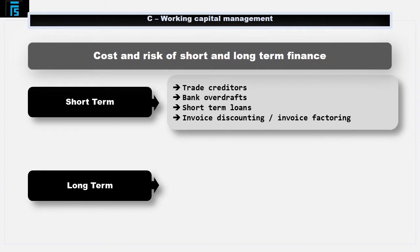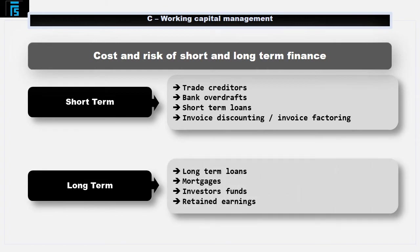Long-term finance sources include long-term loans of say over 20 years, mortgages, investors' funds, and retained earnings. Short-term financing typically tends to be more expensive on an annual basis than long-term debt. However, this is because long-term finance is given by the investor or lender on the basis of it being a long-term investment, and they will receive a higher return over the long term.